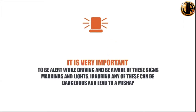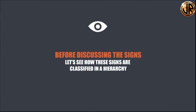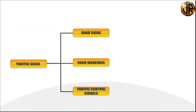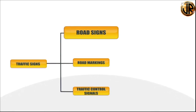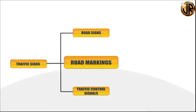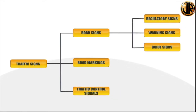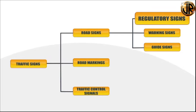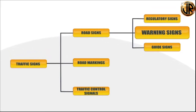It is very important to be alert while driving and be aware of these signs, markings and lights. Ignoring any of these can be dangerous and lead to a mishap. Broadly, traffic signs are divided into three categories: road signs, road markings and traffic control signals. Road signs are further divided into three subcategories: regulatory signs, warning signs, and guide signs.